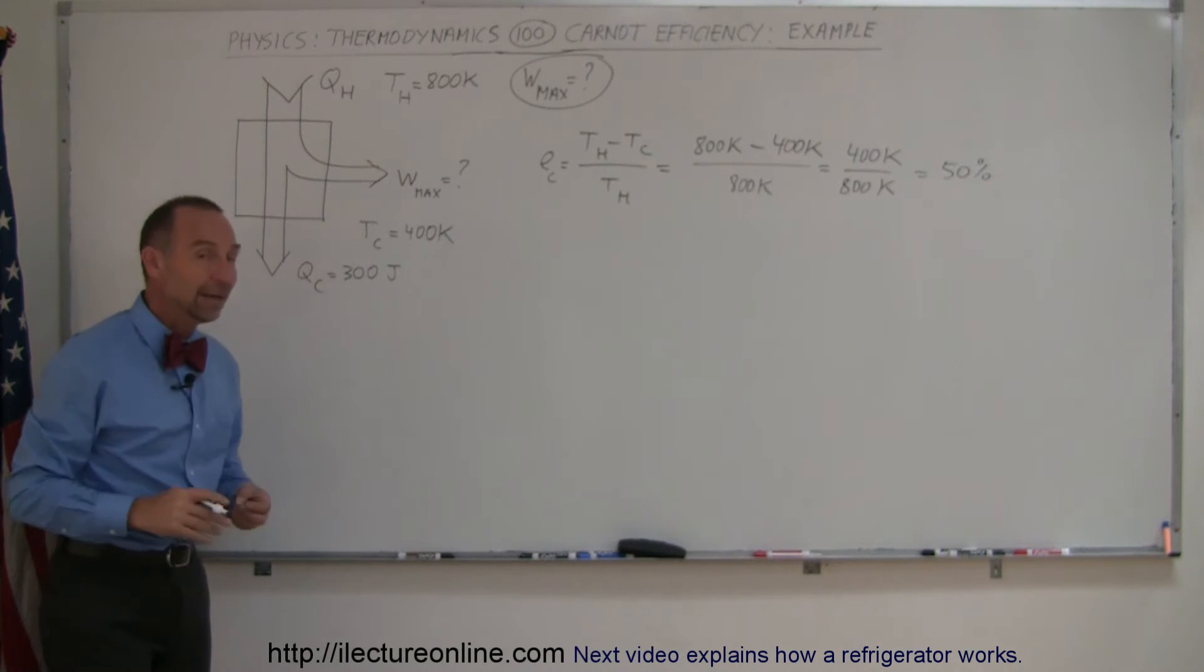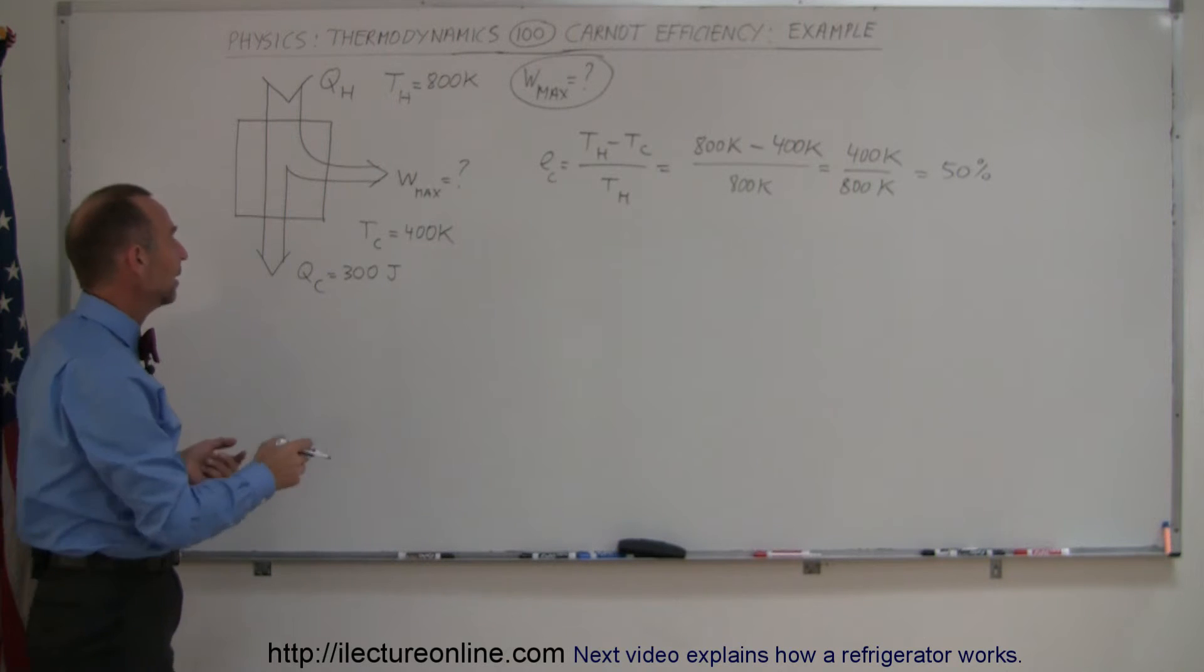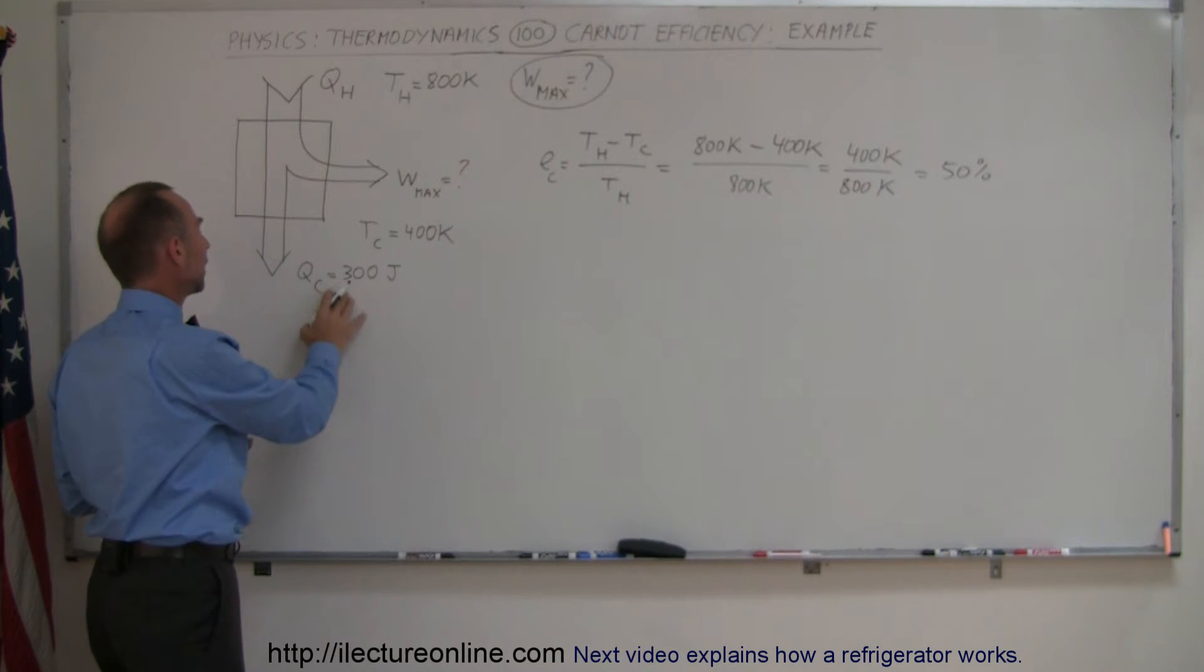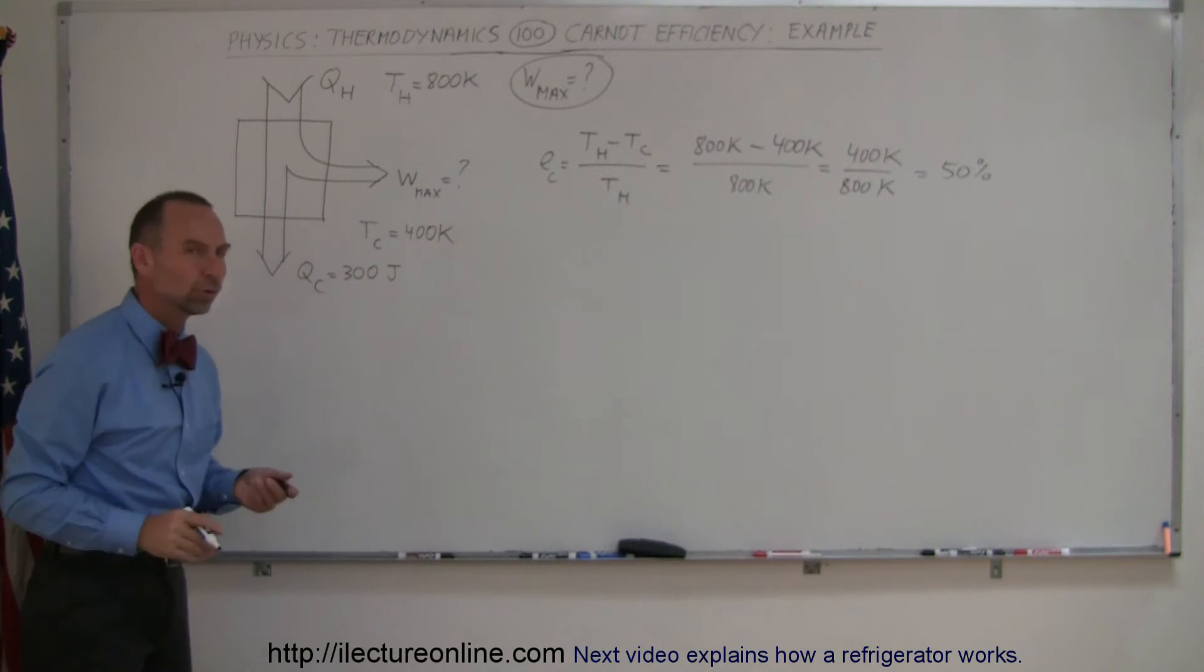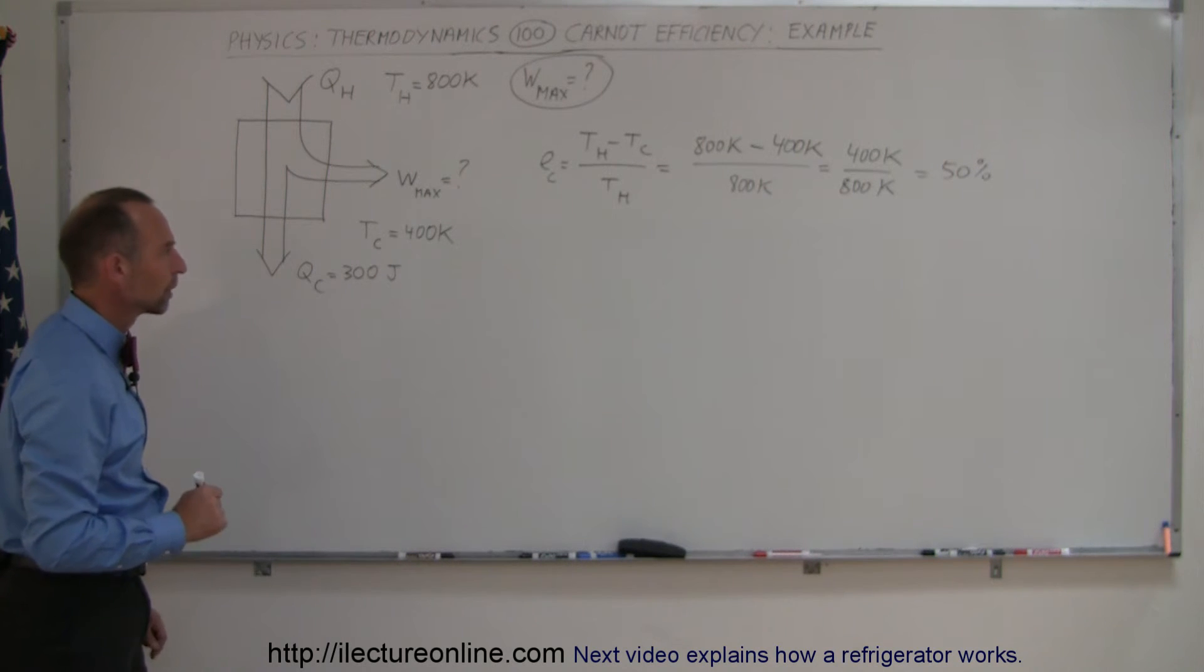Now, if the engineers were able to obtain that maximum efficiency and understanding that the heat expelled to the cold reservoir is 300 joules, how much work can we get out of that engine per stroke?